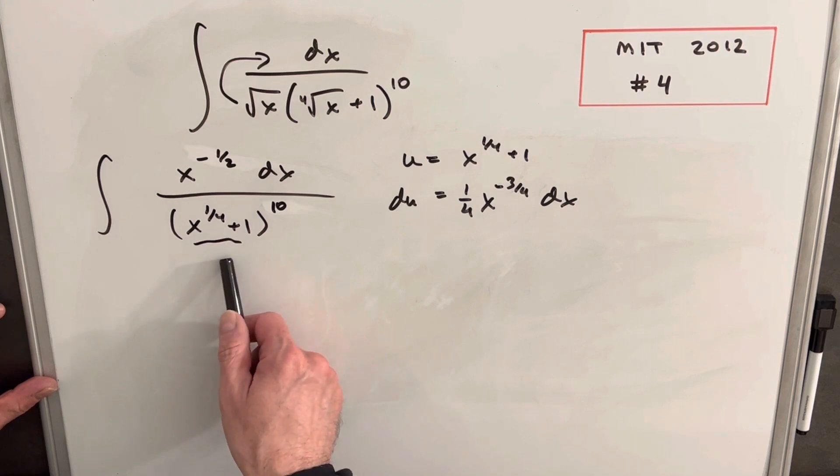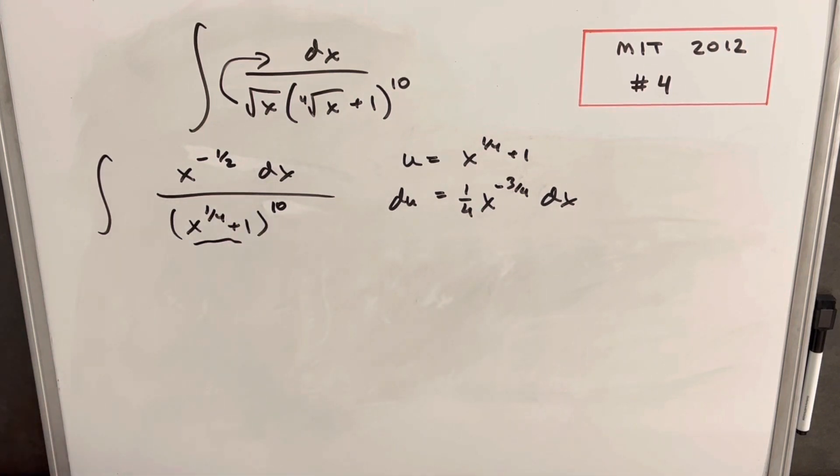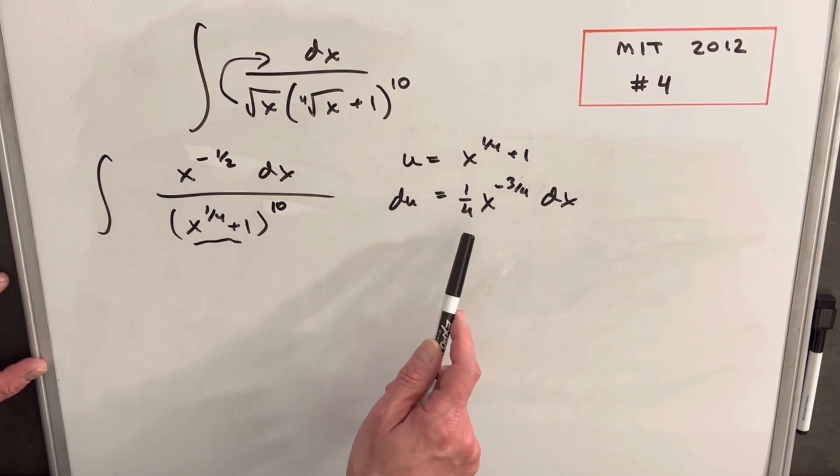This isn't too bad, so we're going to have a u to the tenth when we make our substitution. And the trouble is we don't really have what we want here in the numerator. What I'm wondering is if I can somehow rewrite my numerator so that we can use this. So let's see how this is going to work.